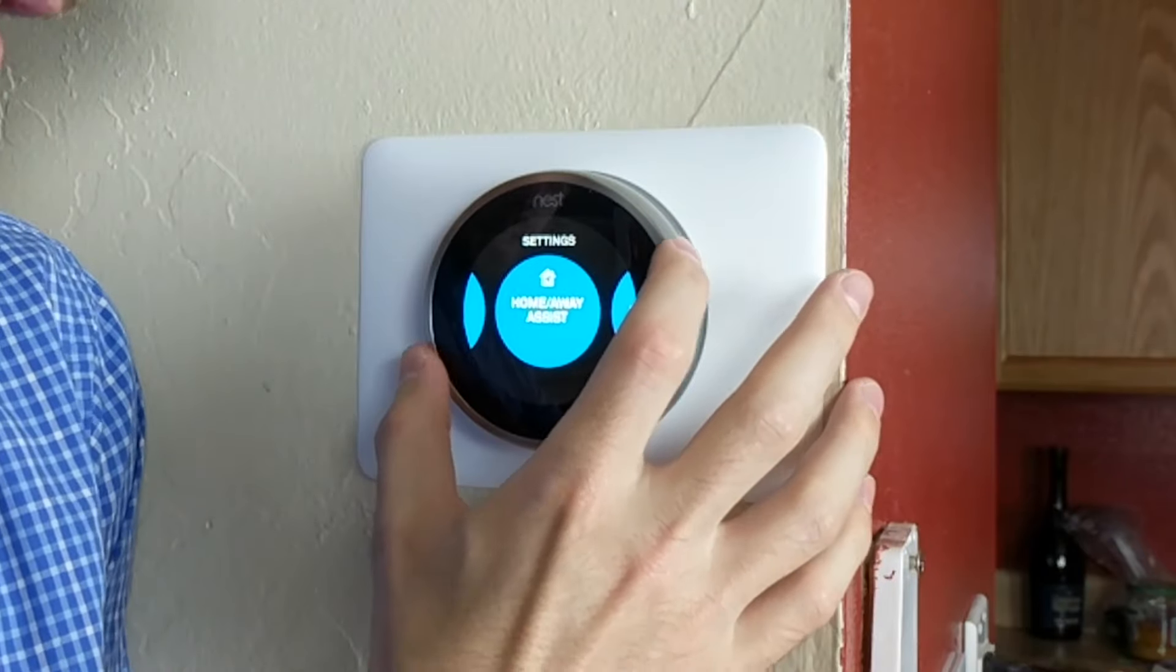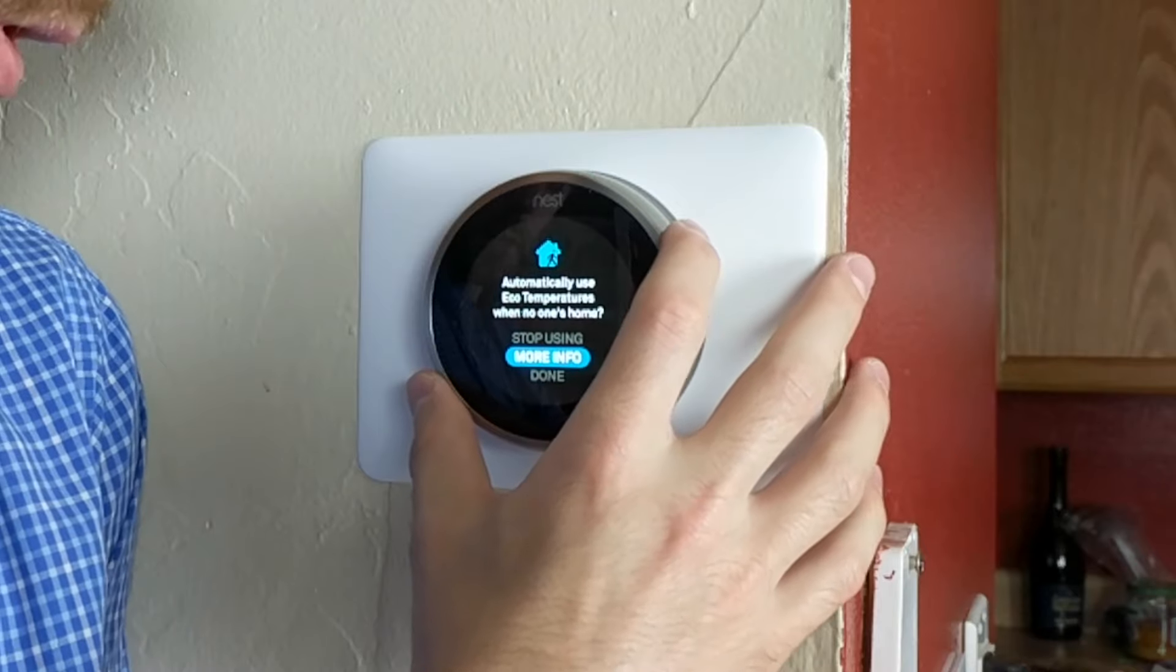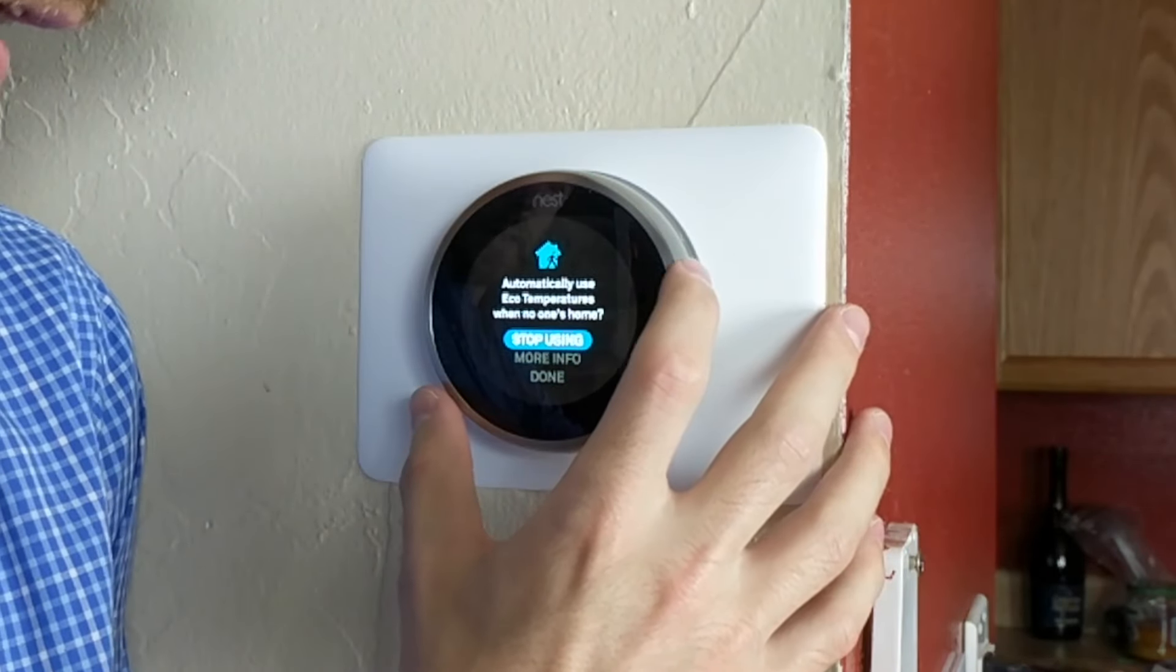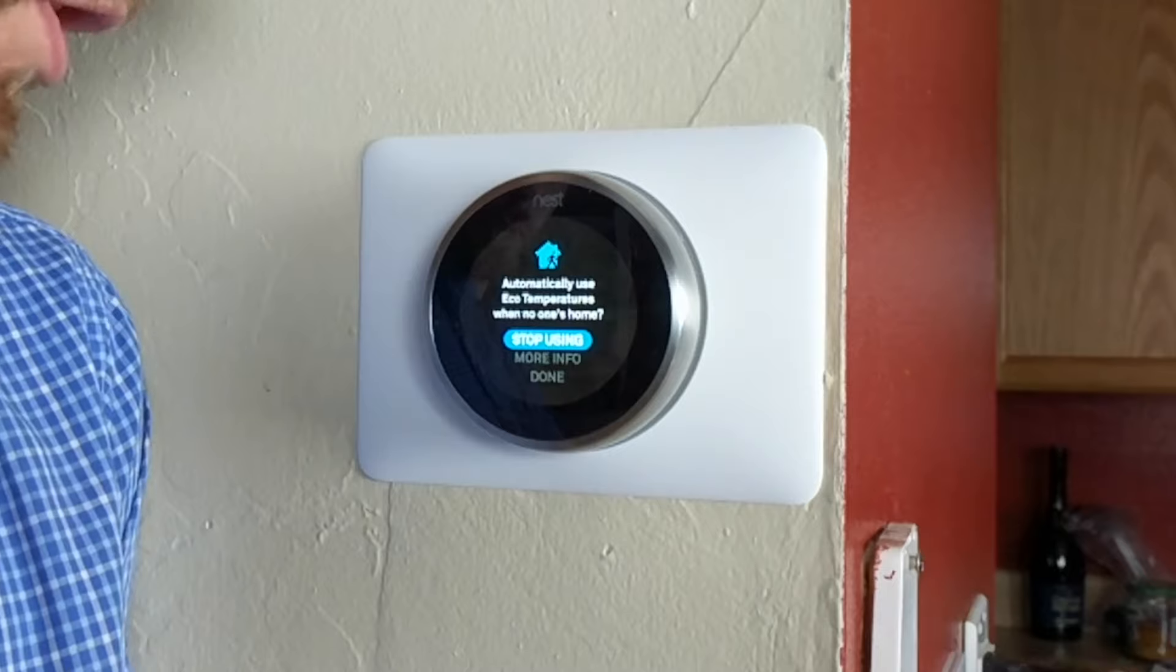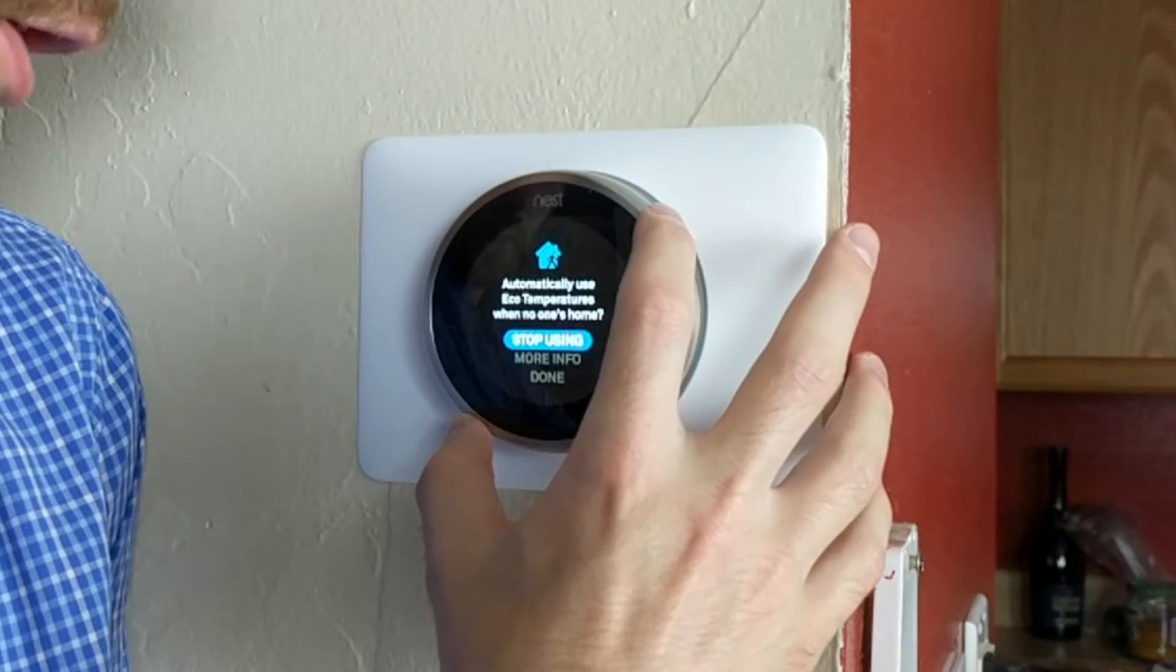You can scroll around to Home/Away Assist. Home/Away Assist is basically when Nest can figure out if you're home or away and can set the temperature to warm things up for when you get home or to turn the thermostat off for when you leave.